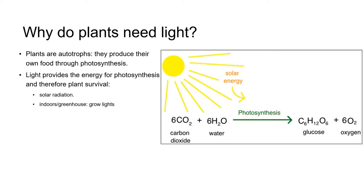Let's remind ourselves why plants need light. Plants are autotrophs, meaning they're able to manufacture their own food, in contrast to animals including humans which are heterotrophs. Plants produce their own food through photosynthesis. They take in carbon dioxide from the atmosphere and water from the soil or substrate and convert them to carbohydrates, releasing oxygen in the process. Light provides the energy source for this process, so no light means no photosynthesis and no plant survival.